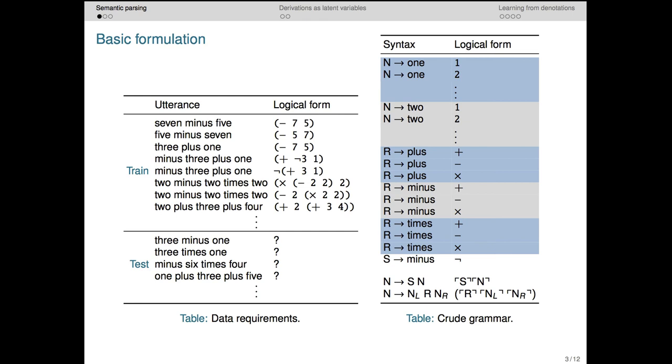Now, as we discussed in the previous lecture, we don't want to try to do this starting from nothing. Rather, we start with a crude or permissive grammar, like the one on the right here. In this grammar, the rules of combination are presumed to be fixed and known by the system. We just code them up by hand.